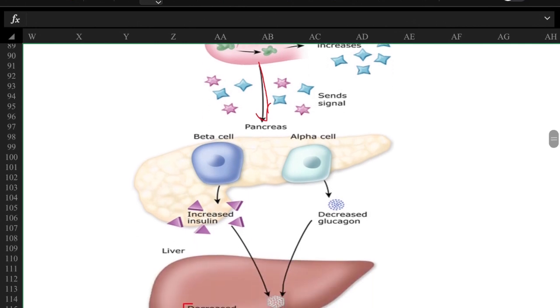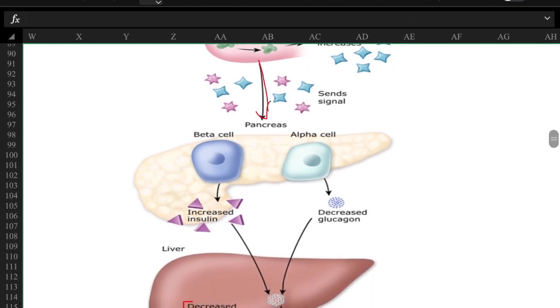Those two incretin hormones are going to do two things when they reach the pancreas. The first is they're going to trigger the beta cells to increase insulin production. Makes sense, we just ate, we need more insulin, we've got a lot of glucose in our blood.